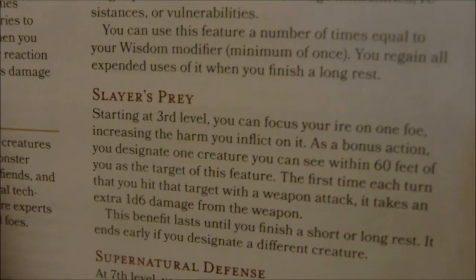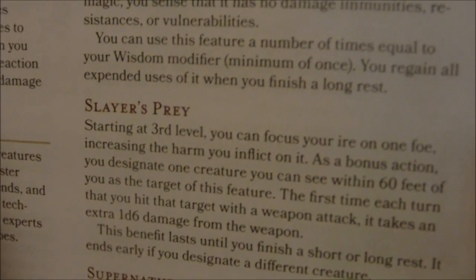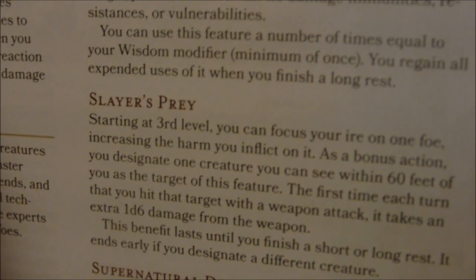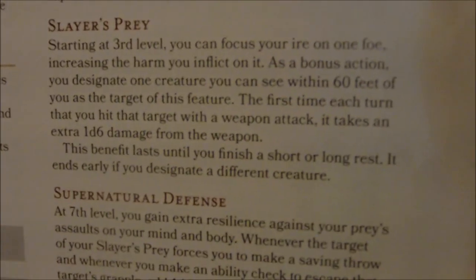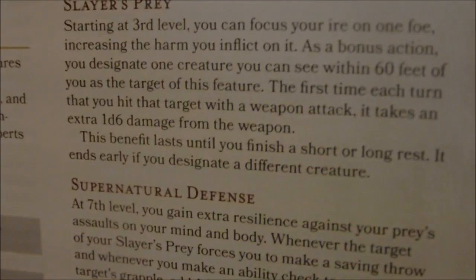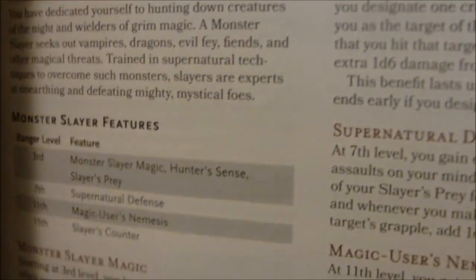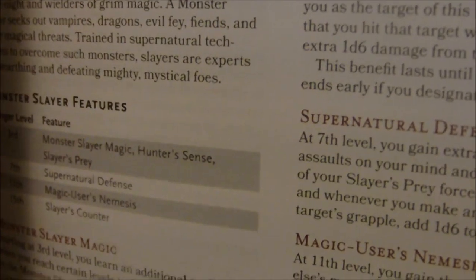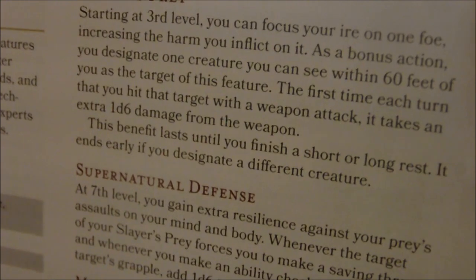Also at third level, Slayer's Prey: as a bonus action, you designate one creature you can see within 60 feet. The first time each turn that you hit that target with a weapon attack, it takes an extra 1d6 damage from the weapon. This benefit lasts until you finish a short or long rest and ends early if you designate a different creature. It's similar to Planar Warrior, except it just increases your normal damage rather than changing the damage type.